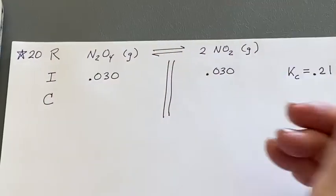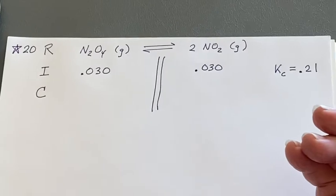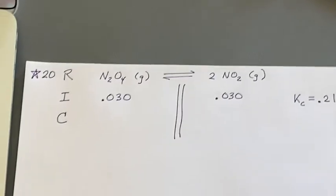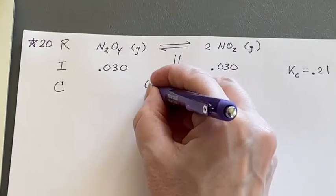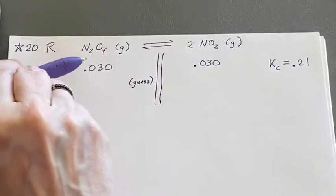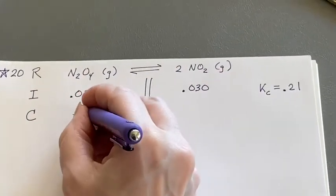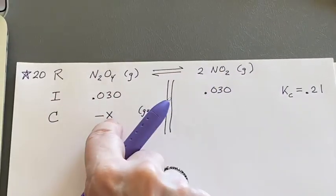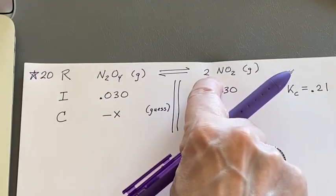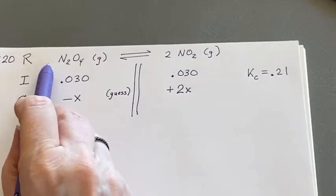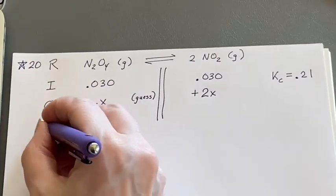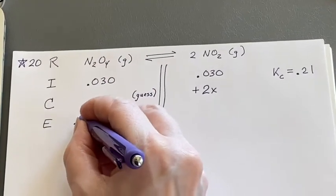Now there's going to be a change. Which way is it going to go? Maybe I don't even want to think about which way it goes. I'm just going to guess - that's perfectly valid because if I guess wrong I'll get a negative number. But I'm going to guess it's going to shift to the right. This is going to go down. If it goes down by x, this one is going to have to go up by 2x. So we just use those stoichiometric coefficients to set that up. And then at equilibrium I am saying that this will be 0.030 minus x and that this will be 2x plus 0.030.